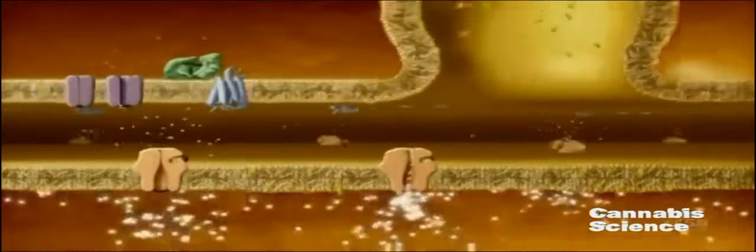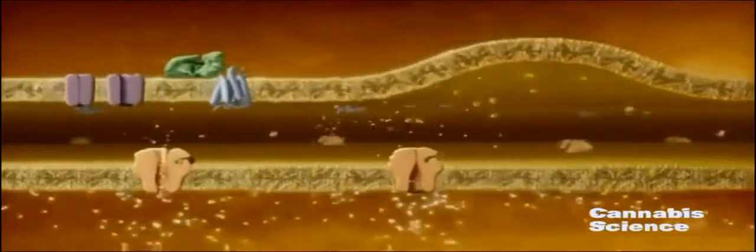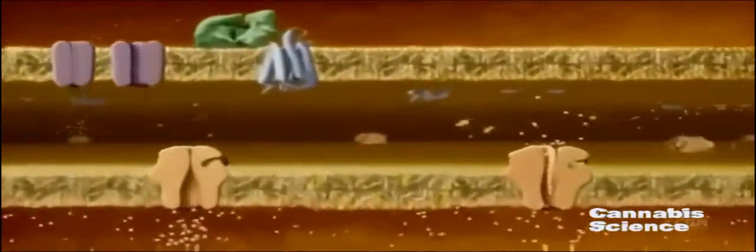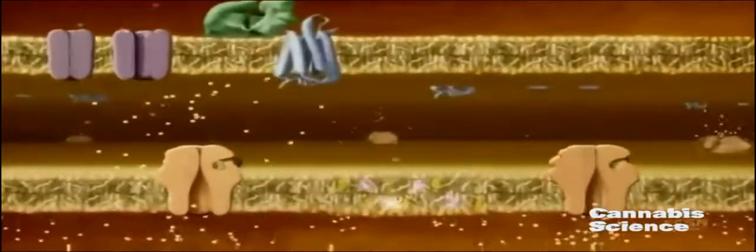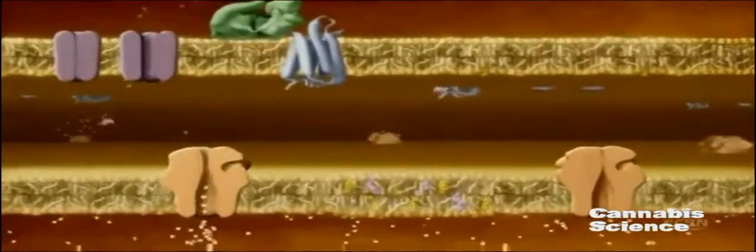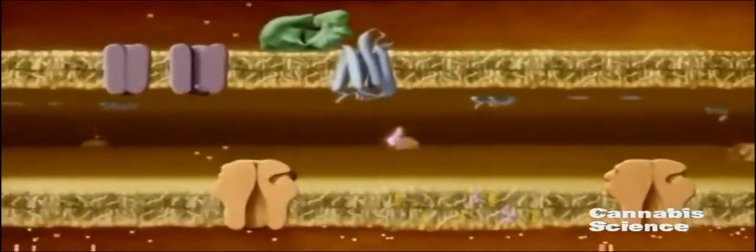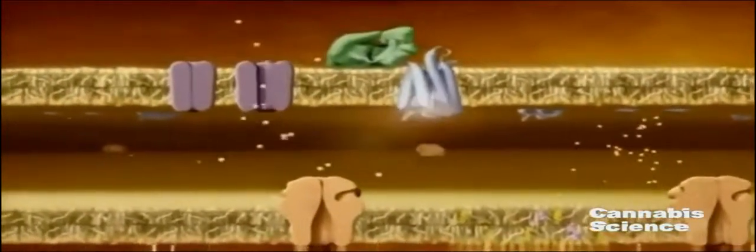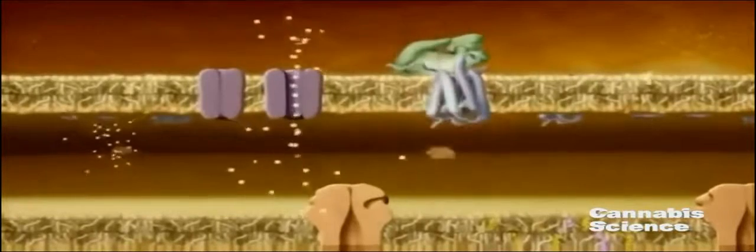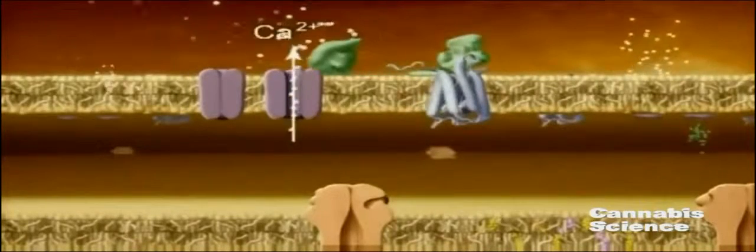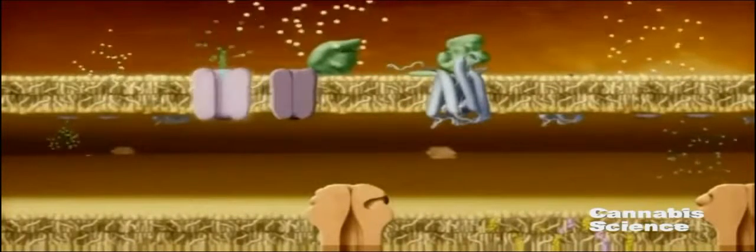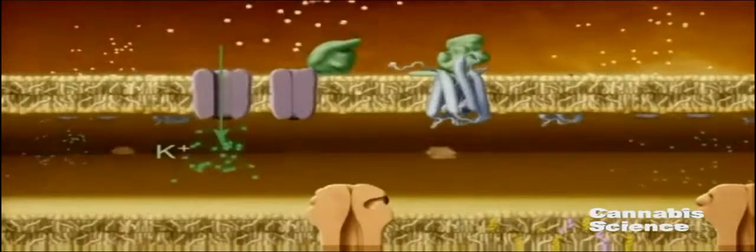Glutamate binds to post-synaptic glutamate receptors, inducing calcium channels to open. During periods of intense neural activity, calcium accumulates in the post-synaptic neuron. This calcium buildup causes the synthesis and release of endocannabinoids from membrane lipids, diffusing across the synaptic cleft.